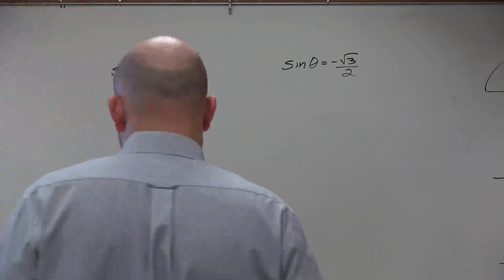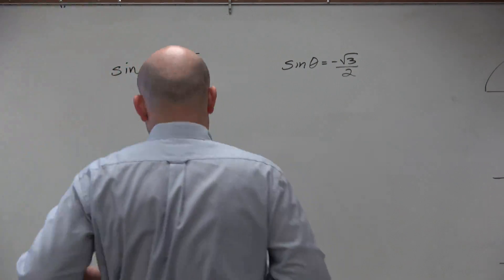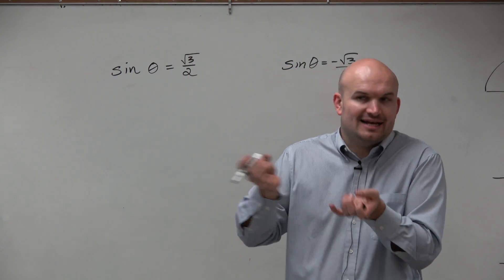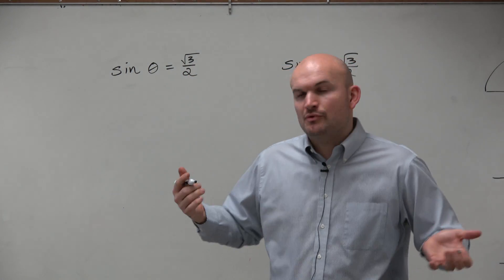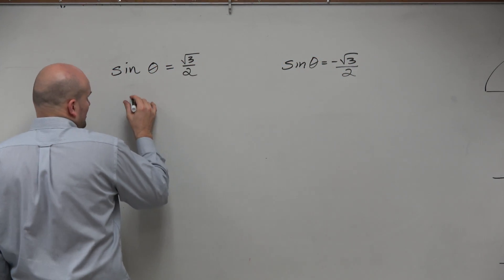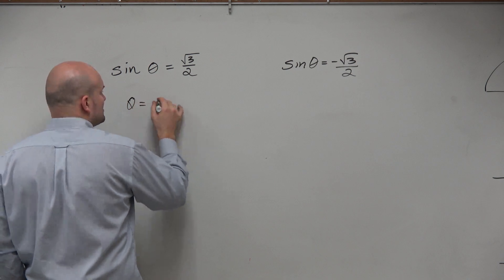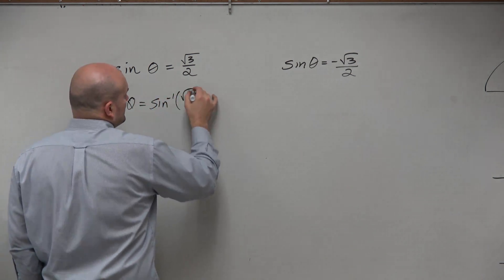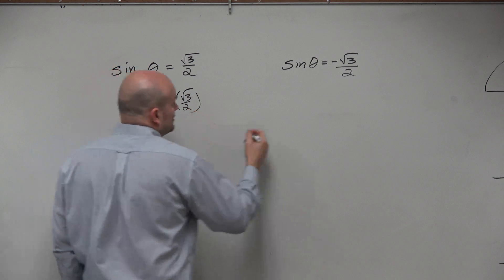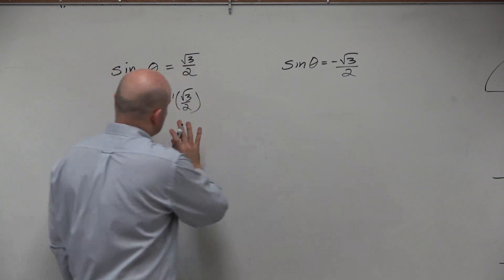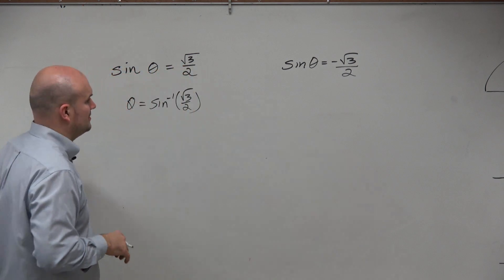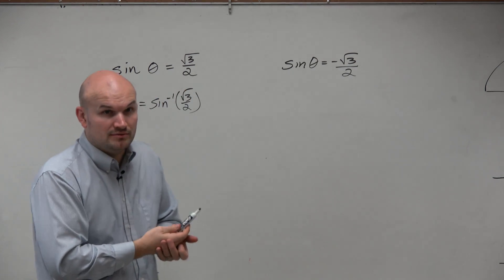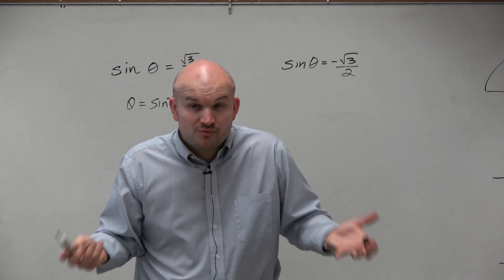So in this example, what we're looking into trying to do is find the angle theta. We could take the sine inverse on both sides if we wanted to, but in reality we know that we're just looking at theta equals sine inverse of square root of 3 over 2. So basically, we're asking: sine of what angle equals the square root of 3 over 2? That's the question we're asking.